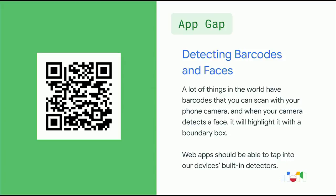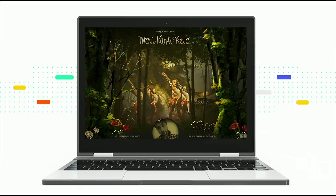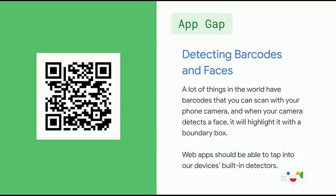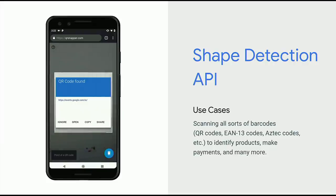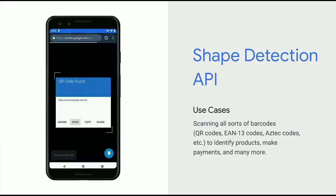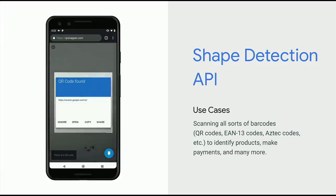With getUserMedia, getting a video stream from the user's webcam is pretty easy. You can use JavaScript libraries to do face detection, or QR codes and that kind of thing. But doing shape detection in JavaScript is kind of expensive, and most native platforms have APIs for this built in. So the Shape Detection API is something that is about to land — it's got three interfaces: a face detector, a barcode detector, and a text detector. The face detector finds a face, but it's just finding your face — there's no facial recognition there.